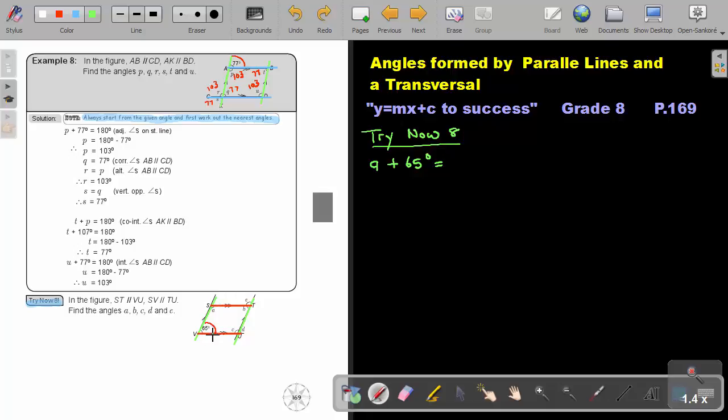So I'm going to say A plus 65 will be equal, look, there's my C or my U, 180. And that is supplementary angles. And the reason is interior angles because ST is parallel to VU.